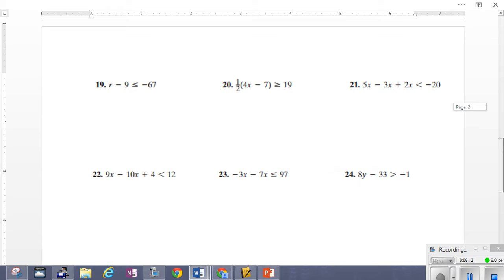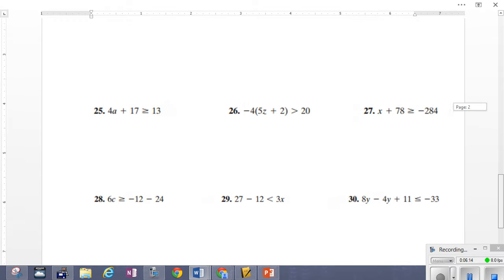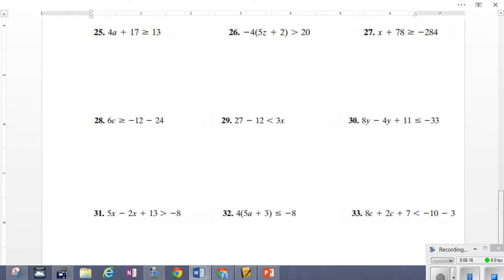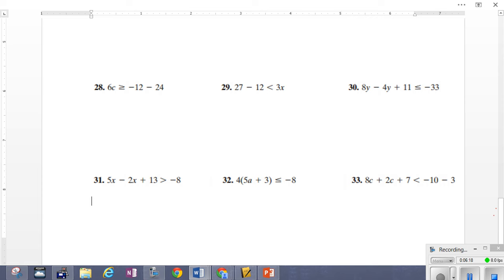Let's remember, dividing by a negative, reverse the sign. Dividing by a negative, reverse the sign. Whenever you divide by a negative, reverse the sign. Let's just do one more. 8y minus 4y is 4y plus 11 is less than negative 33.